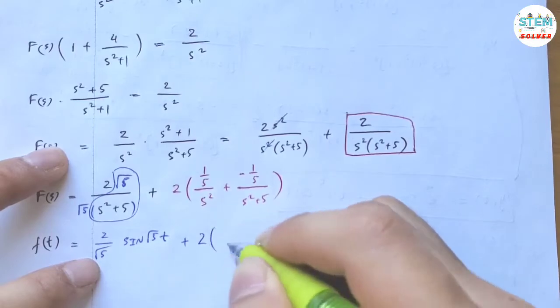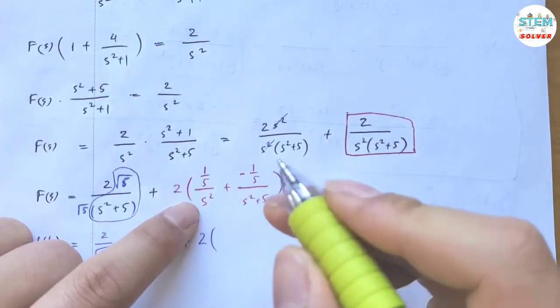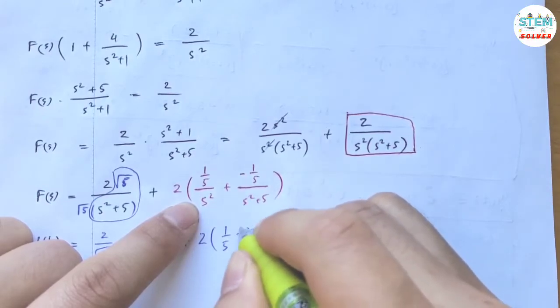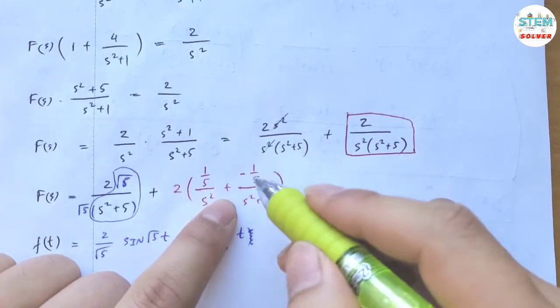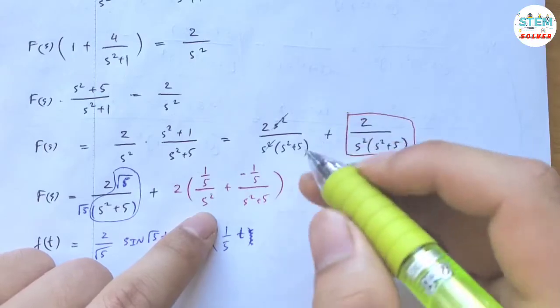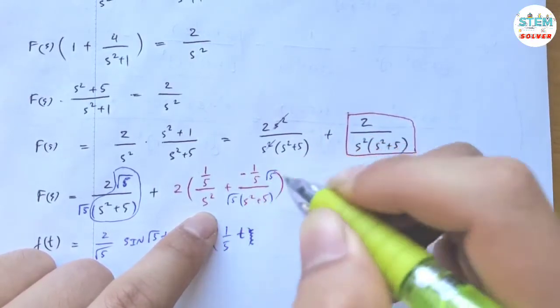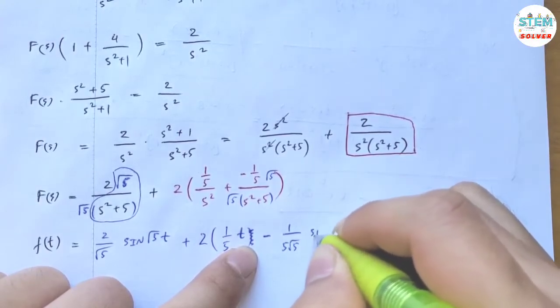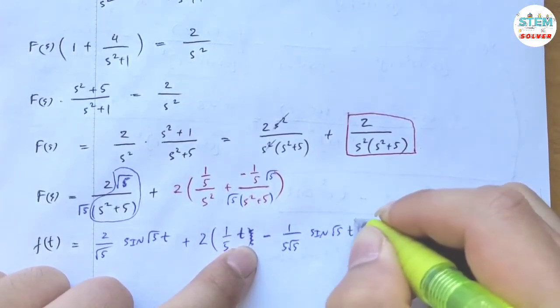Now for this one, the inverse of this is 1/5t. And for this one, again it's similar like this one, so we need to have square root on top and divide it out. So we have 1 over 5 square root of 5 times sine of square root of 5 times t.